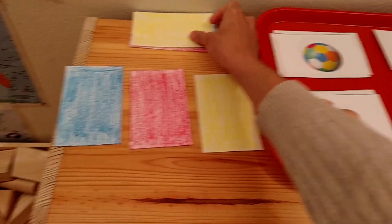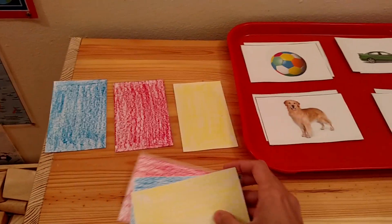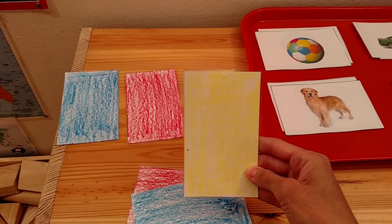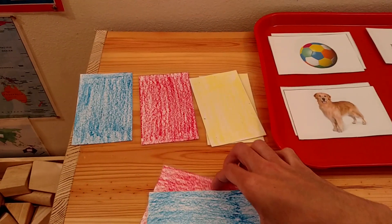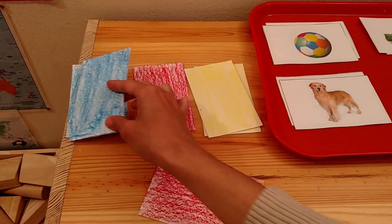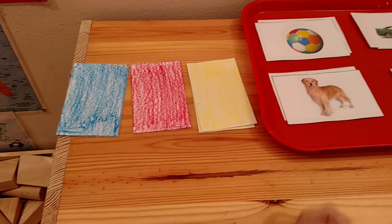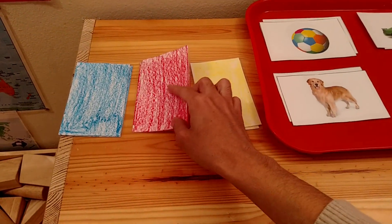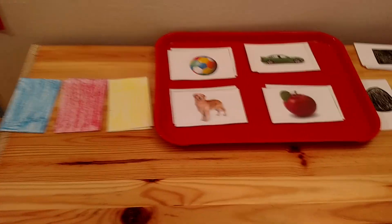And you want to have them start matching. And if they can speak, they can tell you the names. This is yellow. Can you find yellow? This is blue. Can you find blue? This is red. Can you find red? Okay.